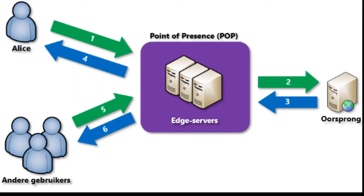If the origin server didn't specify a time to live header, the default is 7 days. Additional users can then request the same file using the same URL that Alice used, and can also be redirected to the same POP. If the TTL for the file has expired, the POP edge server returns the file directly from the cache. This process results in a faster, more responsive user experience.